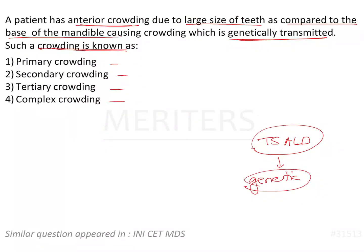Now that we have a basic understanding of the different types of crowding, we know that when there is tooth size arch length discrepancy which is genetically transmitted, this is a type of primary crowding. From this topic they could also ask about simple crowding and complex crowding, as well as first degree, second degree, and third degree crowding, so you should go through these topics as well.